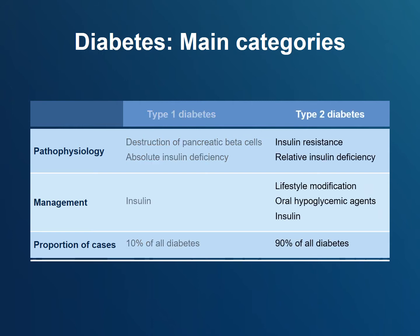While the pancreas can make and secrete insulin in type 2 diabetes, the cells in the body cannot use it as well. This is called insulin resistance. As a result, people with type 2 diabetes are often treated with non-insulin-based medications, although over time some will also need insulin. Of all diabetes cases, 90% or more are from type 2 diabetes.